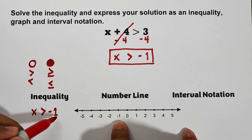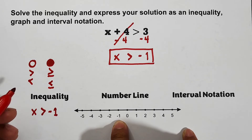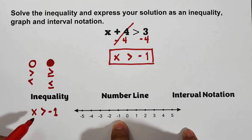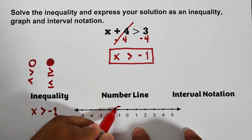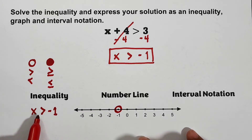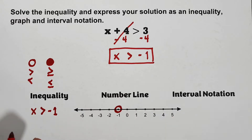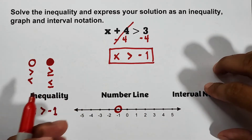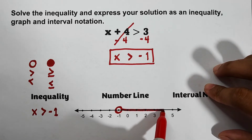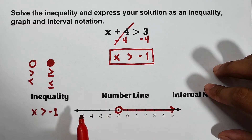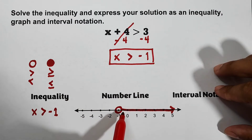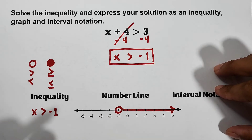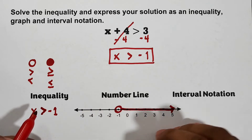When you use strictly greater than or strictly less than, the critical value is not included in the solution. When you use greater than or equal to or less than or equal to, the critical value is included. In this case we use an open circle at negative 1. Since x is greater than negative 1, the numbers greater than negative 1 are to the right, so we draw a line going to the right.